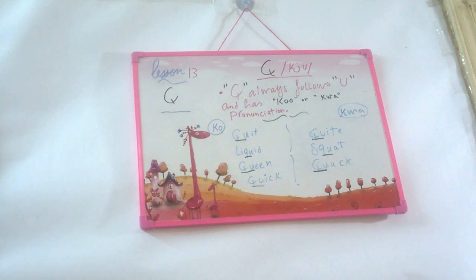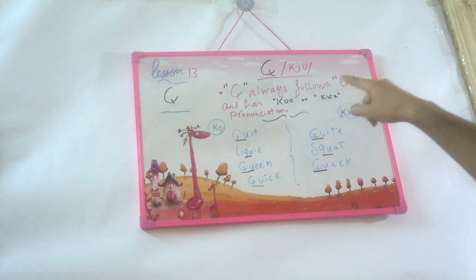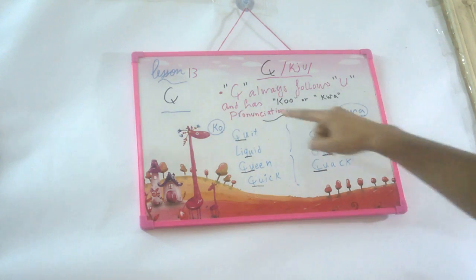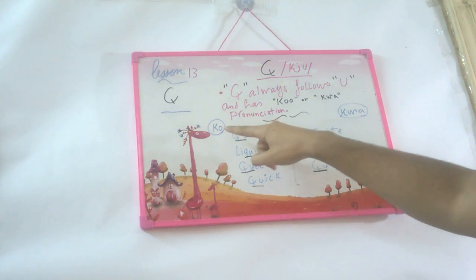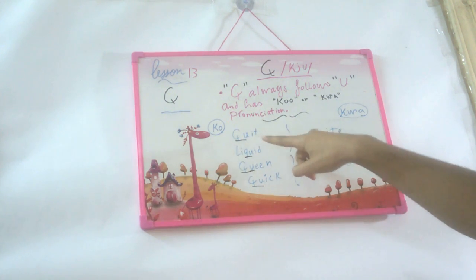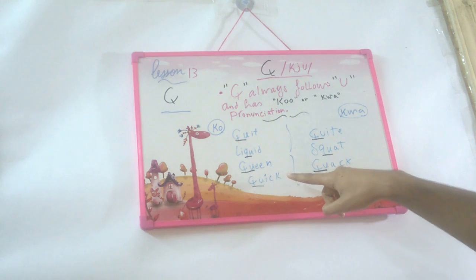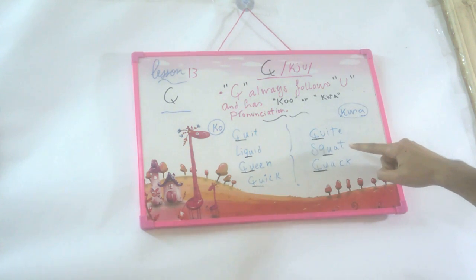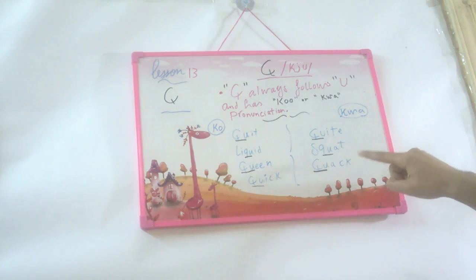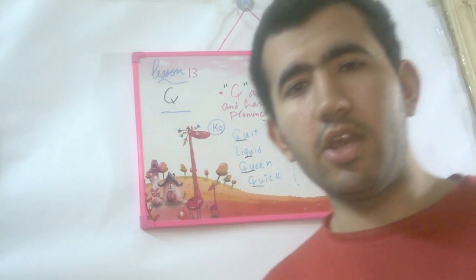So, let's recap: Q always follows U and has a 'kw' or 'k' pronunciation. 'kw' like quit, liquid, queen, and quick. And 'kw' like quite, squat, and quack. Thank you for watching this video, and I hope to see you soon. Bye-bye.